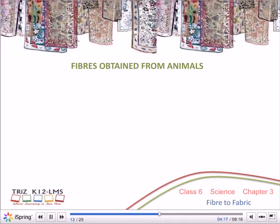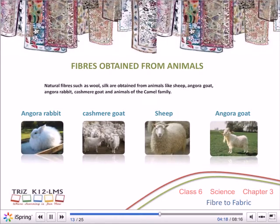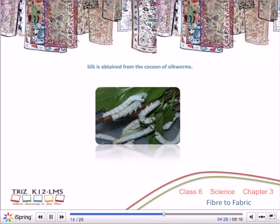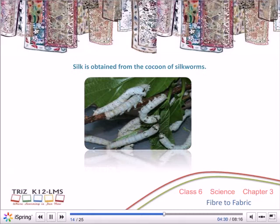Natural fibres such as wool and silk are obtained from animals like sheep, angora goat, angora rabbit, cashmere goat and animals of the camel family. Silk is obtained from the cocoon of silk worms.